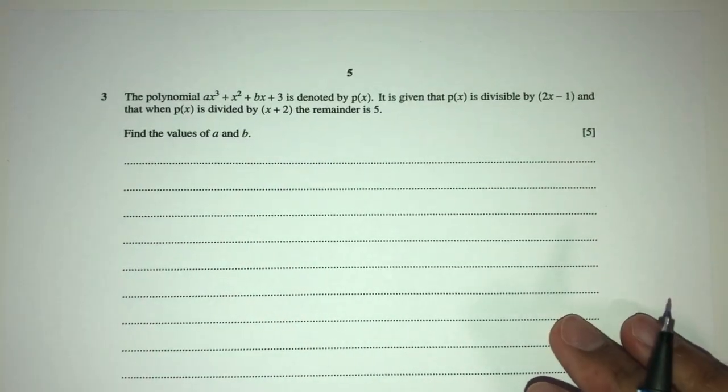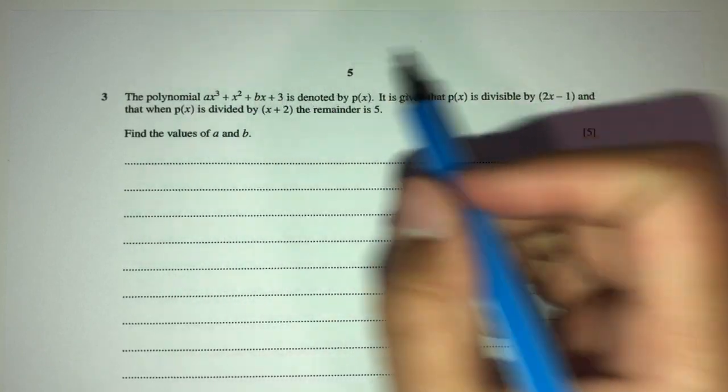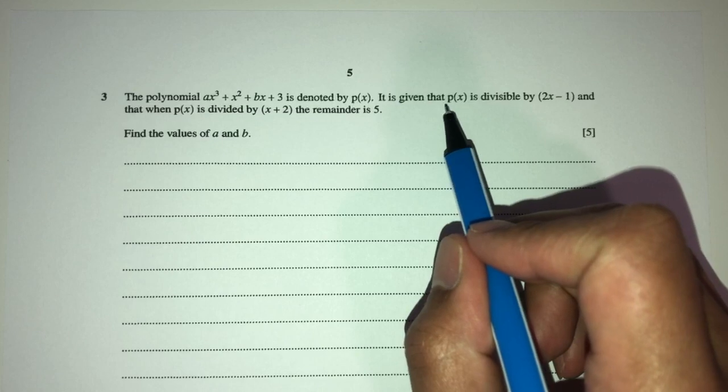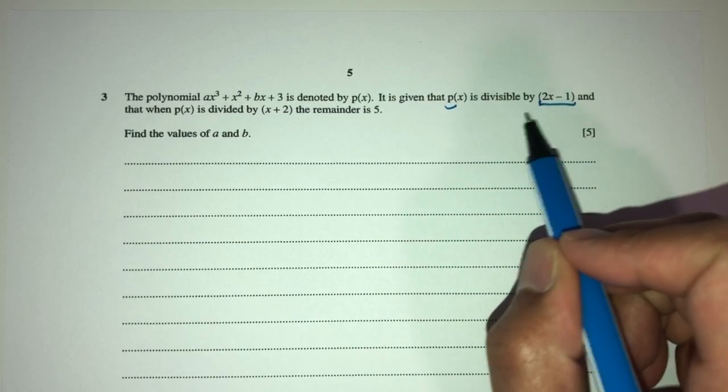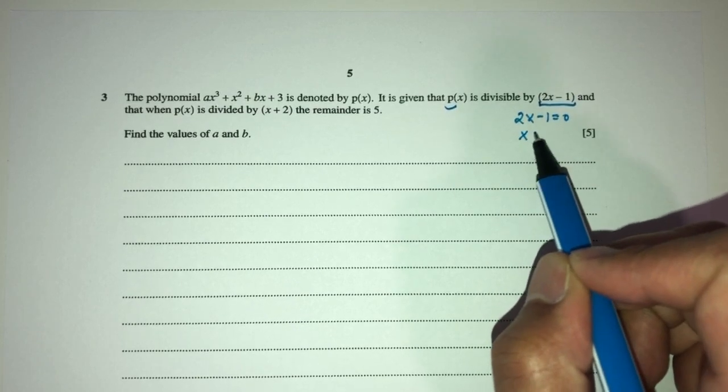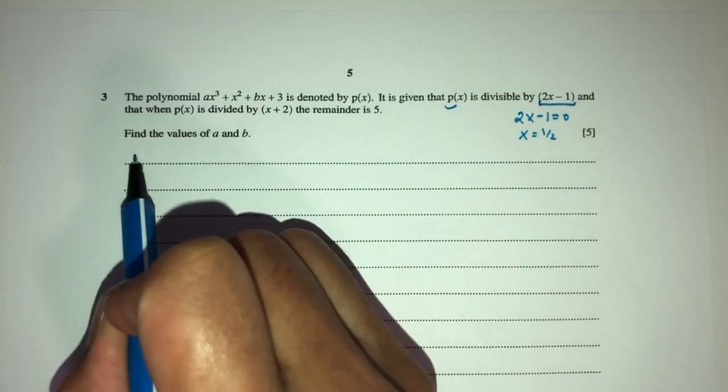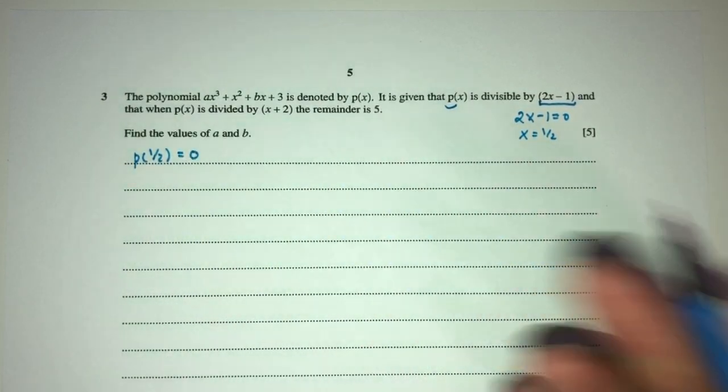Now let's move on to question number three. So here we have p of x is defined by this one, okay? Now when p of x is divisible by this one, which means it is a factor of p of x. Now for one value of x, we take the same thing, equate to 0, x will be half. So it means that when p takes in the value of half, the remainder will be 0. That's what it means.